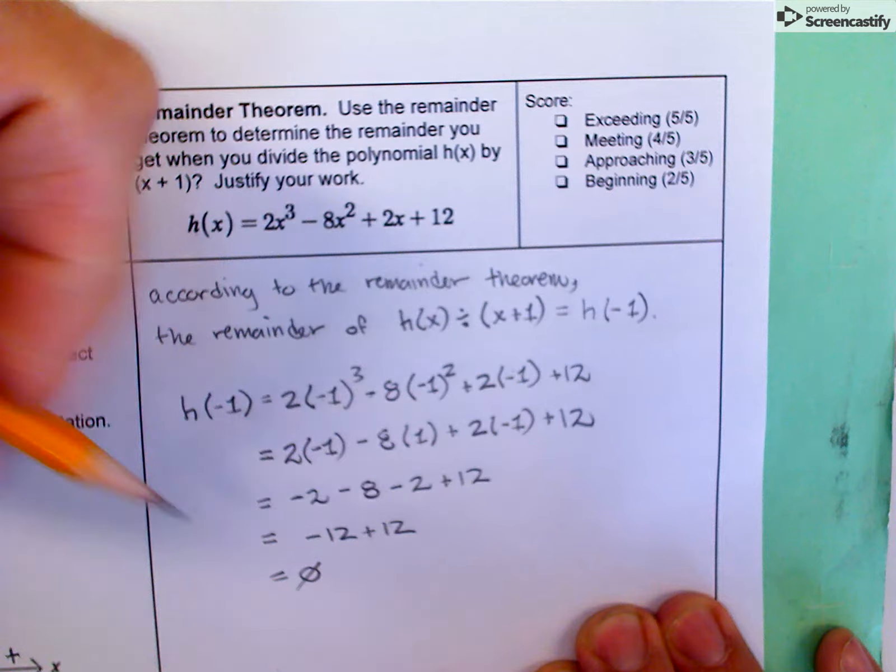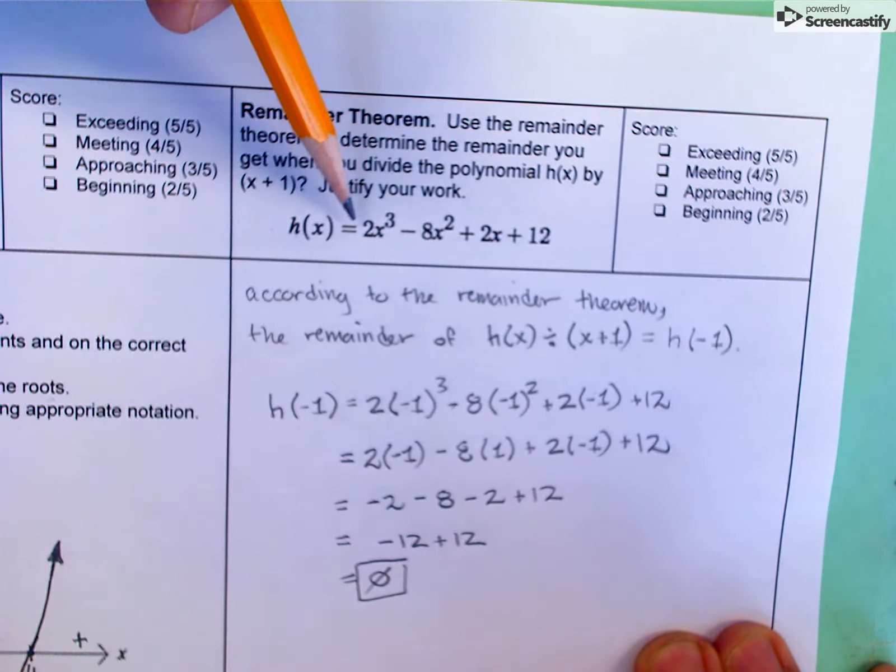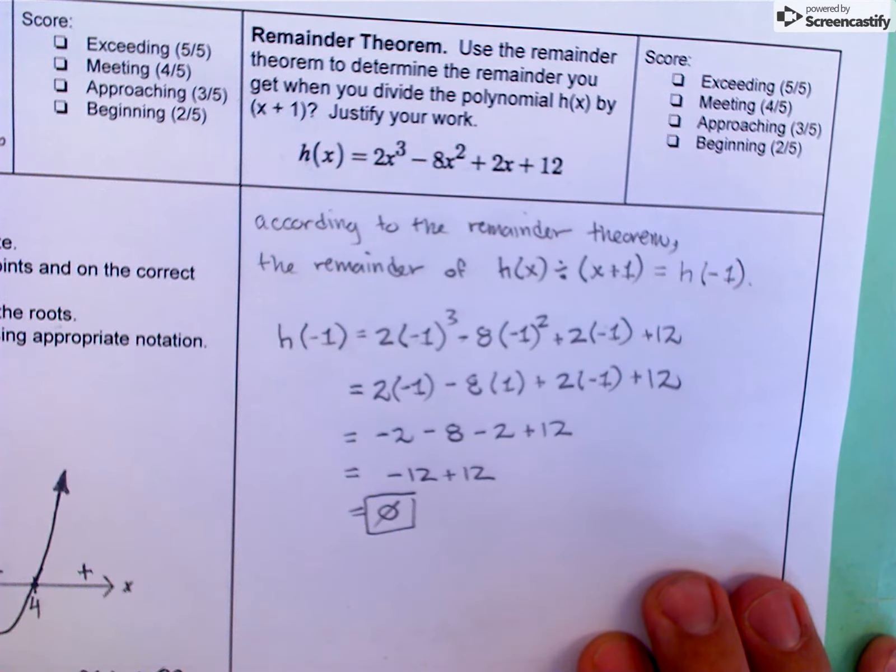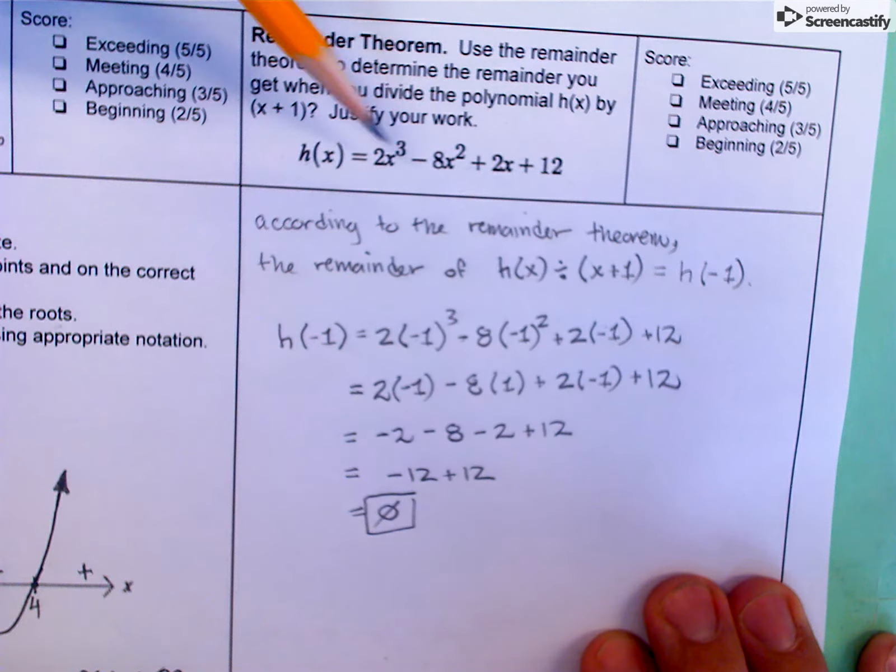So the remainder you get when you divide h(x) by x plus 1 is 0. What that means is that x plus 1 is actually a factor of this polynomial. If you went and tried to factor this, you would find that x plus 1 is a factor. Alternatively, if you did long division and divided this polynomial by x plus 1, you would get a remainder of 0 and be left with a quadratic. You could continue factoring from there if your task was to factor this.